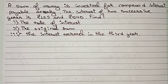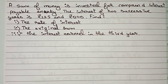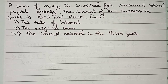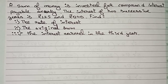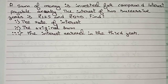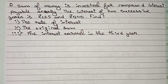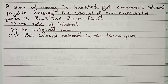Hello guys, welcome to this video. The question is: if a sum of money is invested for compound interest payable annually, the interest parts of two successive years are ₹225 and ₹240. Find the rate of interest, the original sum, and the interest in the third year. I'll solve this.